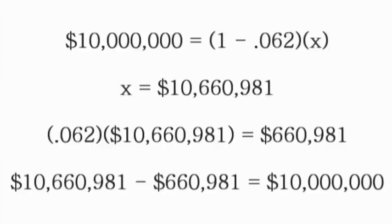To solve this, we use simple algebra. We take the amount of money the company needs after flotation costs — in our case $10 million — and set it equal to 1 minus the flotation cost rate. Since our rate is 6.2% or 0.062, the formula is: $10 million = (1 − 0.062) × x.